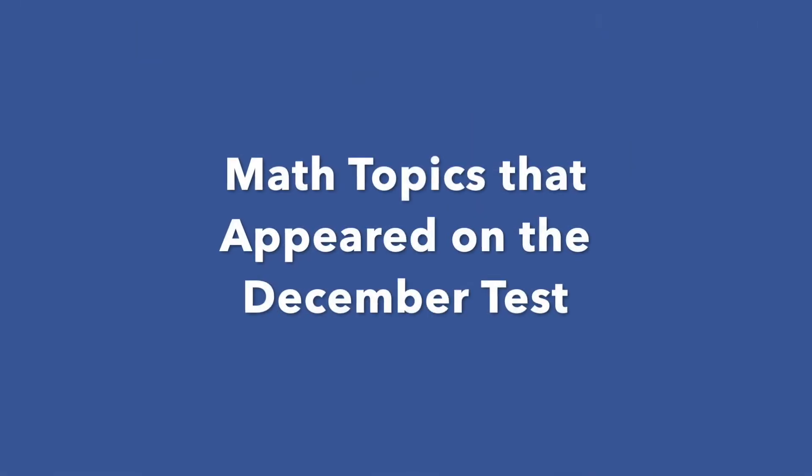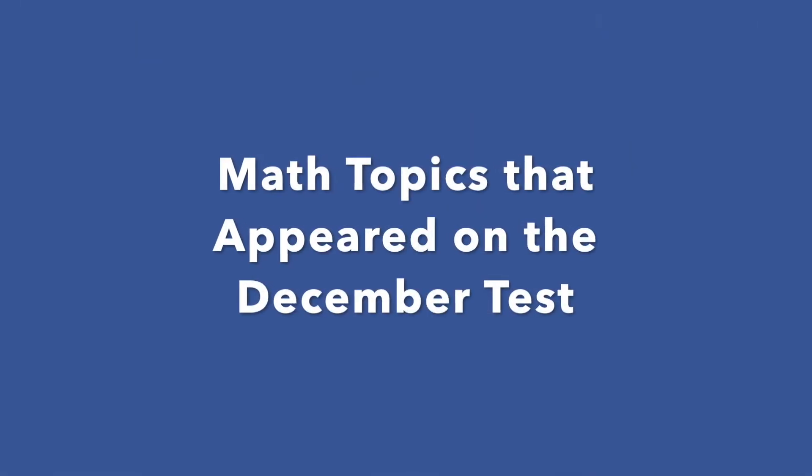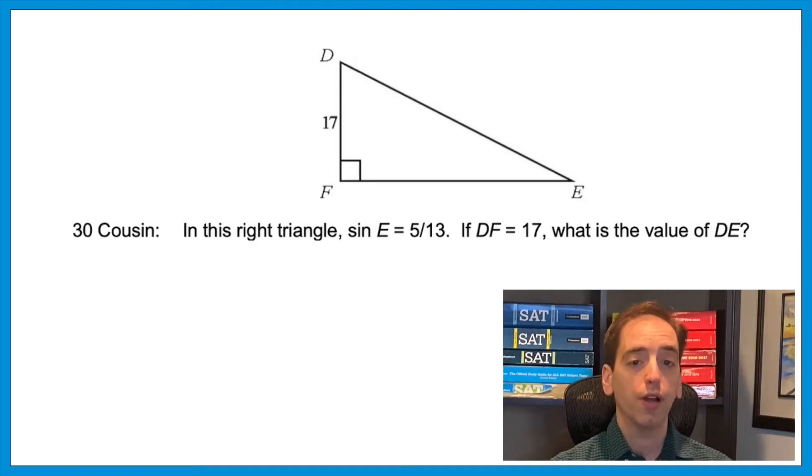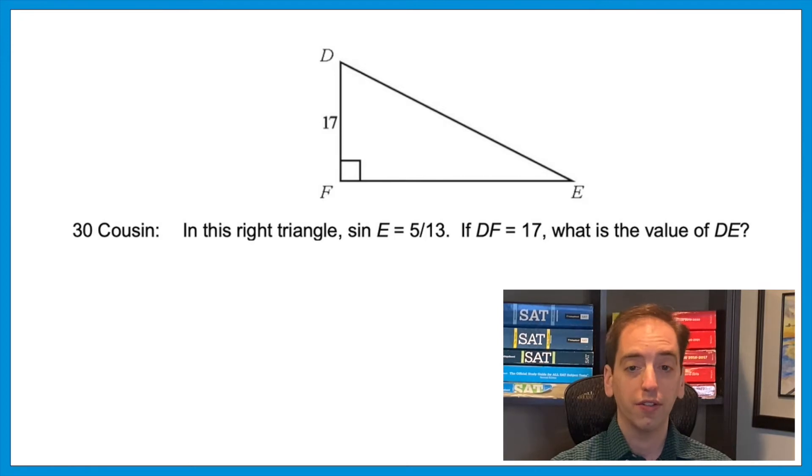For those of you studying for the SAT, this harder semicolon variation also appeared on the Wednesday 2020 PSAT — so keep an eye out. It's rare, but it will pop up. Now let's get to some of the math topics. This next one is a cousin of question 30 from the December test: in a right triangle, the sine of E is 5 over 13. If DF is 17, what is the value of DE?